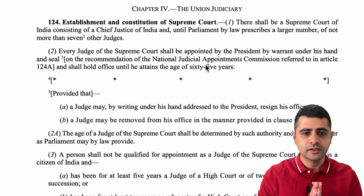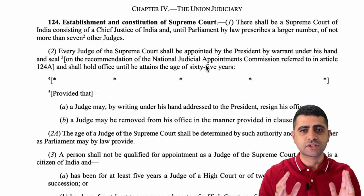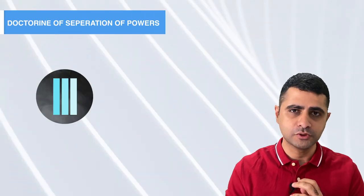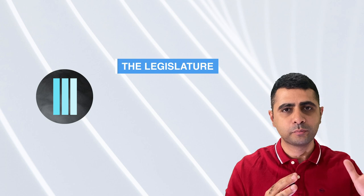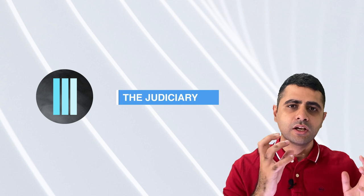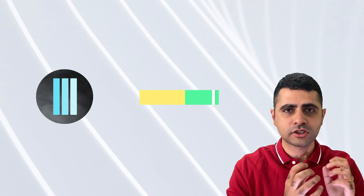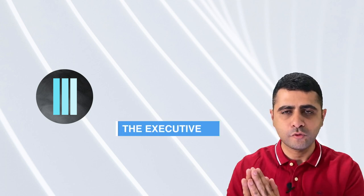We start with the Constitution of India, where Article 124 talks about the formation of a Supreme Court. Under the Constitution, we have the concept of the doctrine of separation of powers. This concept is the basis of the three pillars of democracy: a legislature that deals with making laws, a judiciary that interprets these laws and ensures they are followed, and an executive — the police force and armed forces — which makes sure that such directions of the judiciary are followed to the T.